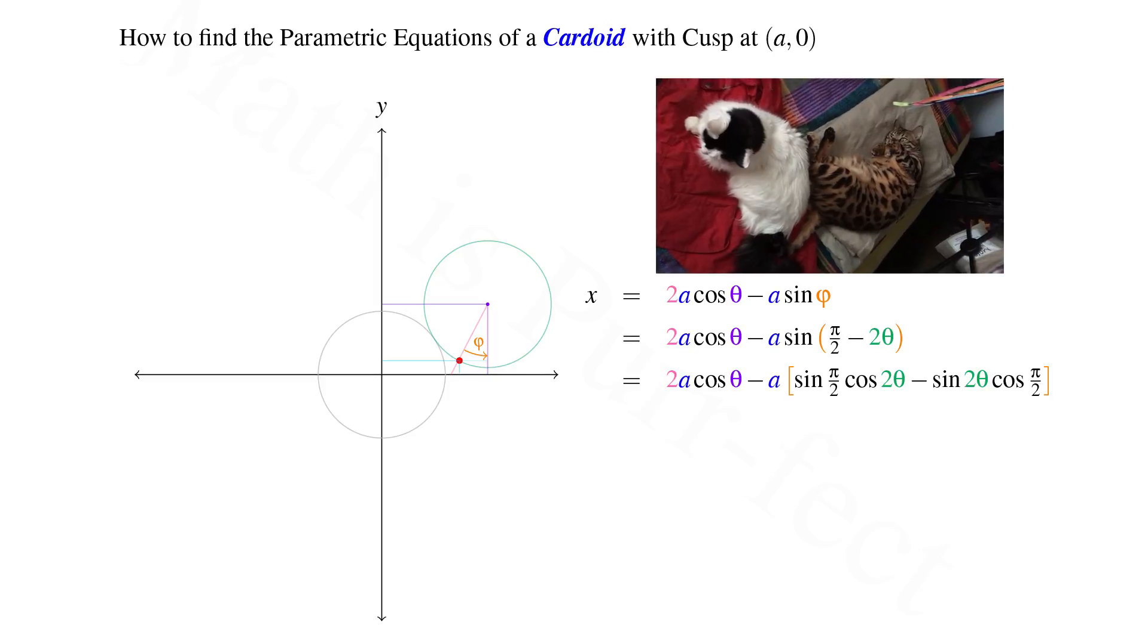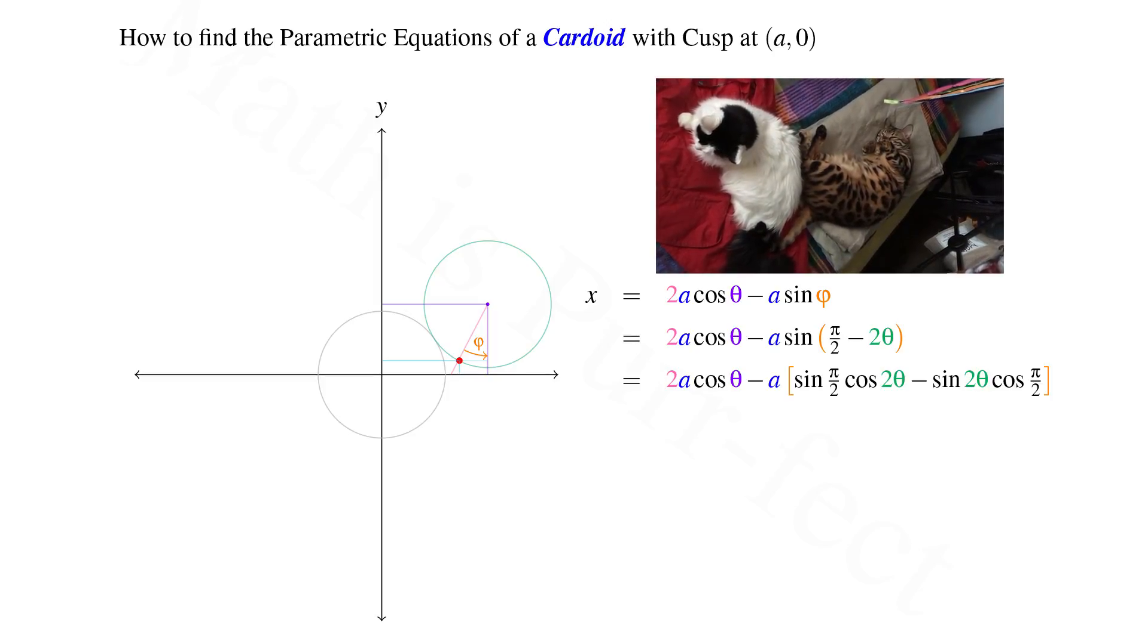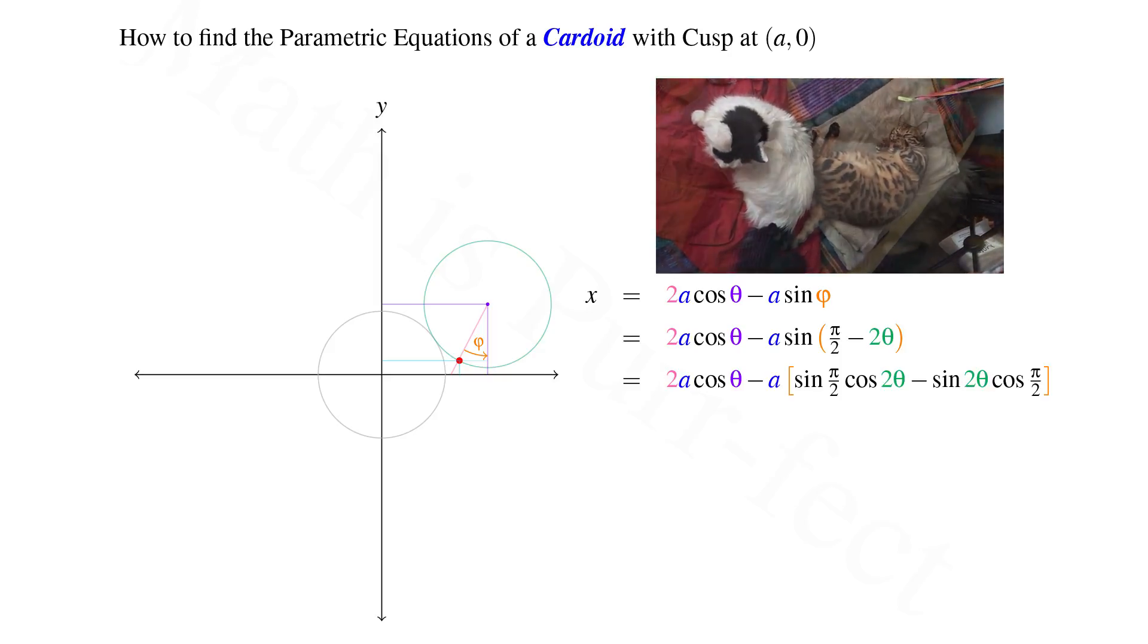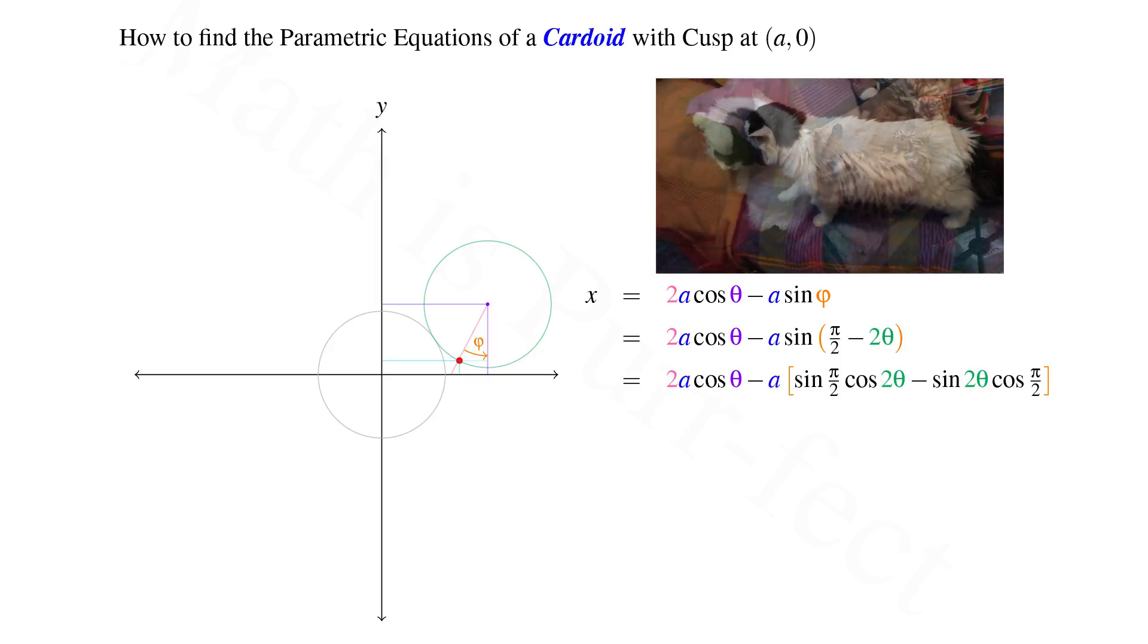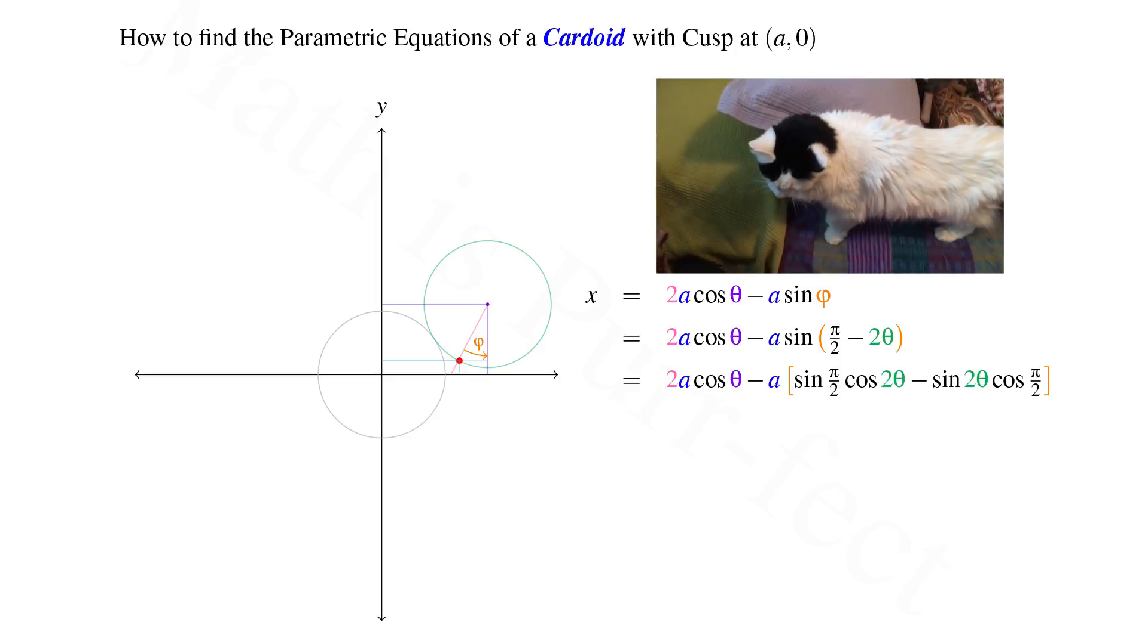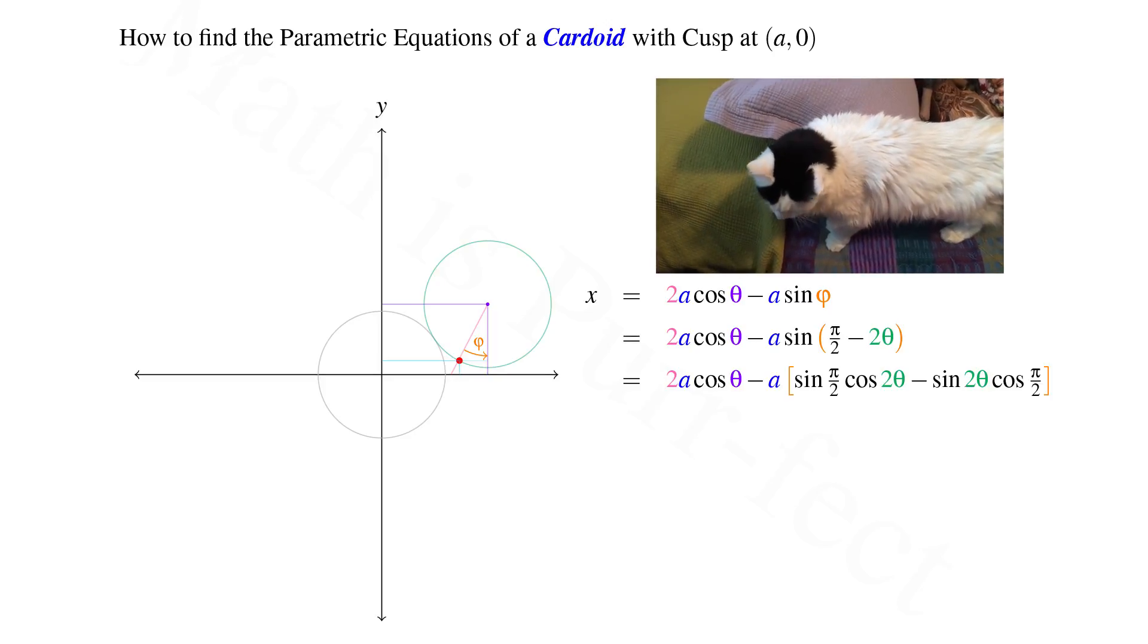we conclude that sine of pi over 2 minus 2 theta expands to sine of pi over 2 cosine of 2 theta minus cosine of pi over 2 sine of 2 theta. Since sine of pi over 2 is 1 and cosine of pi over 2 is 0, the identity simplifies to cosine of 2 theta.